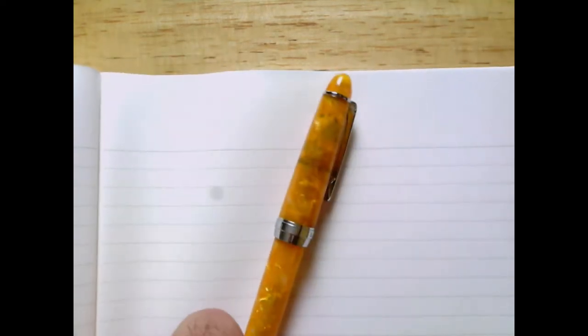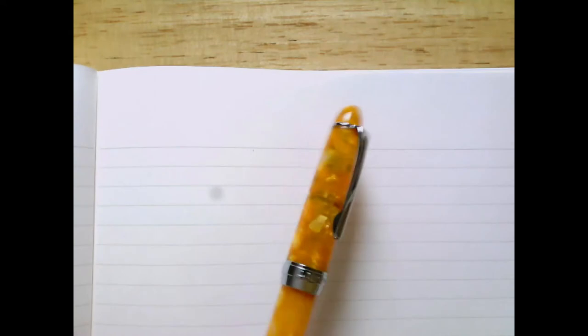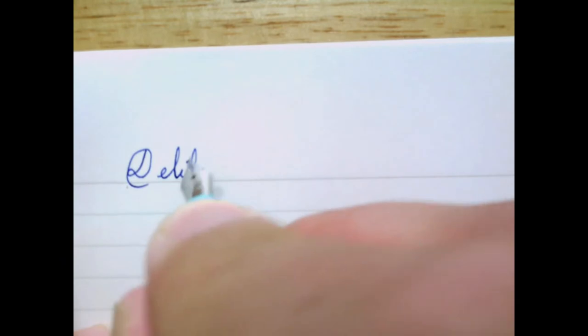The feed is just your plain old ordinary comb feed. Around the cap you get to see the words Delike and then New Moon. It comes in several colors, some very attractive colors. One of the colors is very similar to this Lorelei Lingmo that I like very much, but I bought this one because it was pretty and I don't have too many turquoise pens.